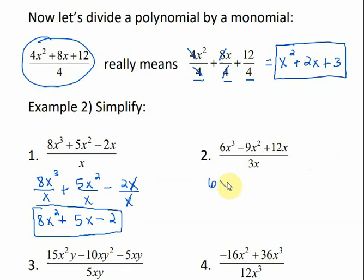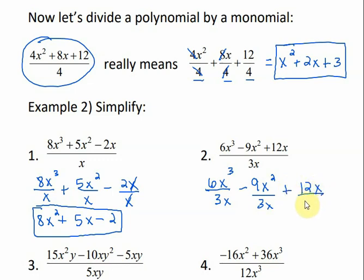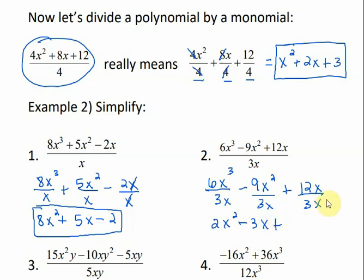Number 2: we divide every term by 3x. Since I have a 3 in the denominator, I divide it into the number on top. 6 divided by 3 is 2, and x cubed divided by x is x squared. Negative 9 divided by 3 is negative 3, and x squared divided by x is x. Plus, these x's cancel — 12 divided by 3 is 4.